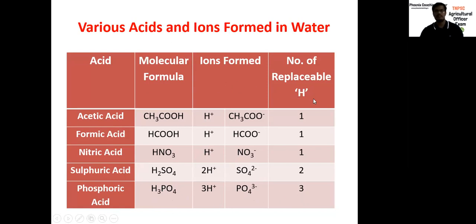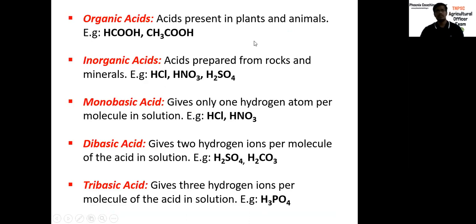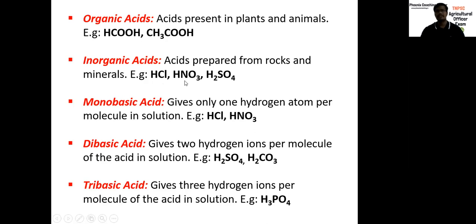These questions are very important for TNPC general science chemistry. Types of acids: acids can be classified into two types mainly — organic acids and inorganic acids. Organic acids are derived from plants and animals. For example, HCOOH is formic acid, present in ants or bees. Acetic acid, CH3COOH, is present in vinegar. Inorganic acids are available in common labs and are prepared from rocks and minerals. For example, hydrochloric acid, nitric acid, and sulfuric acid.